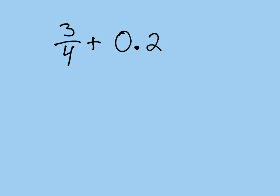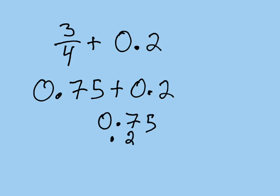This one is really easy for me to turn into decimal because I know 3/4 is 0.75, and we're going to add that to 0.2. We stack them, lining up the decimal, and we say 5 plus nothing is 5, 7 plus 2 is 9, and we have our decimal, so the answer is 0.95.